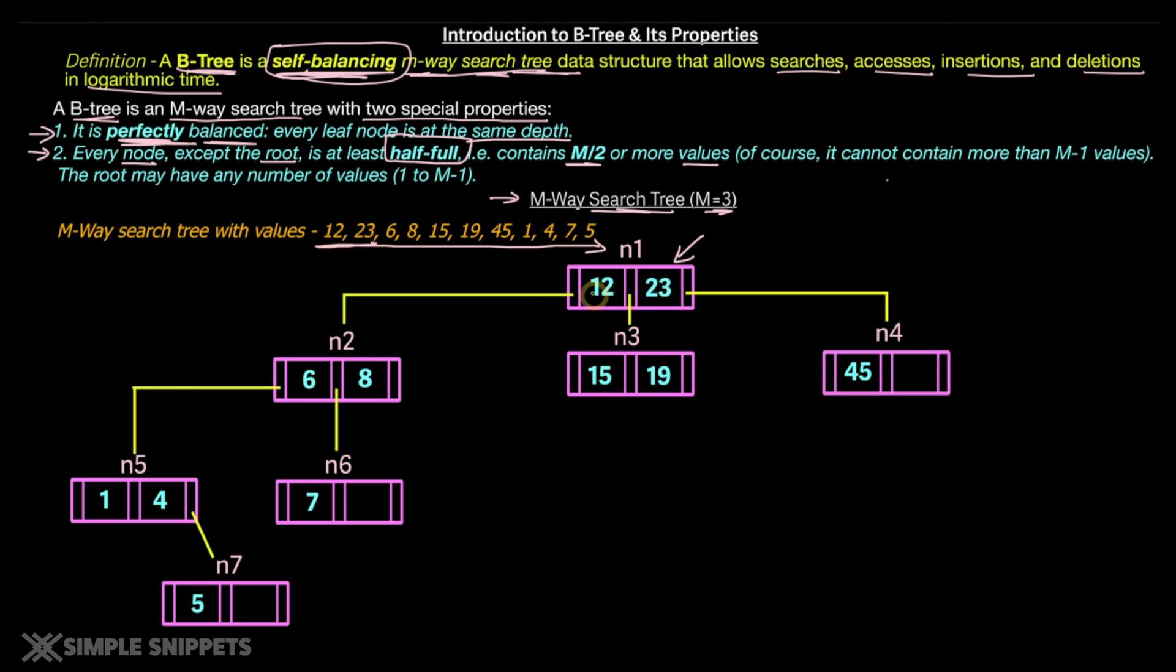When six came in, we went to the left of N1. Then came eight, eight got accumulated over here. Then came 15, 15 is greater than 12, but smaller than 23. Hence we created one new node in between them. And this process got us a M-way search tree, which looks something like this. Now if you observe this tree, is it balanced? It's not balanced, right?